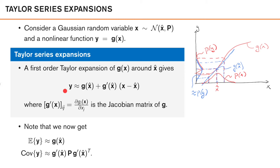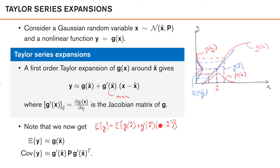Note that g'(x) is, in general, the Jacobian matrix of g, where the (i,j) element is the partial derivative of the i-th row of g with respect to the j-th component of x. This is an m×n matrix, where m is the dimension of y and n is the dimension of x. As this is a linear mapping, we can simply calculate the mean and covariance of this Gaussian approximation. The expected value of y is g(x̂), since x̂ is the mean of x and the remaining term has expected value zero. So the expected value is just g(x̂).